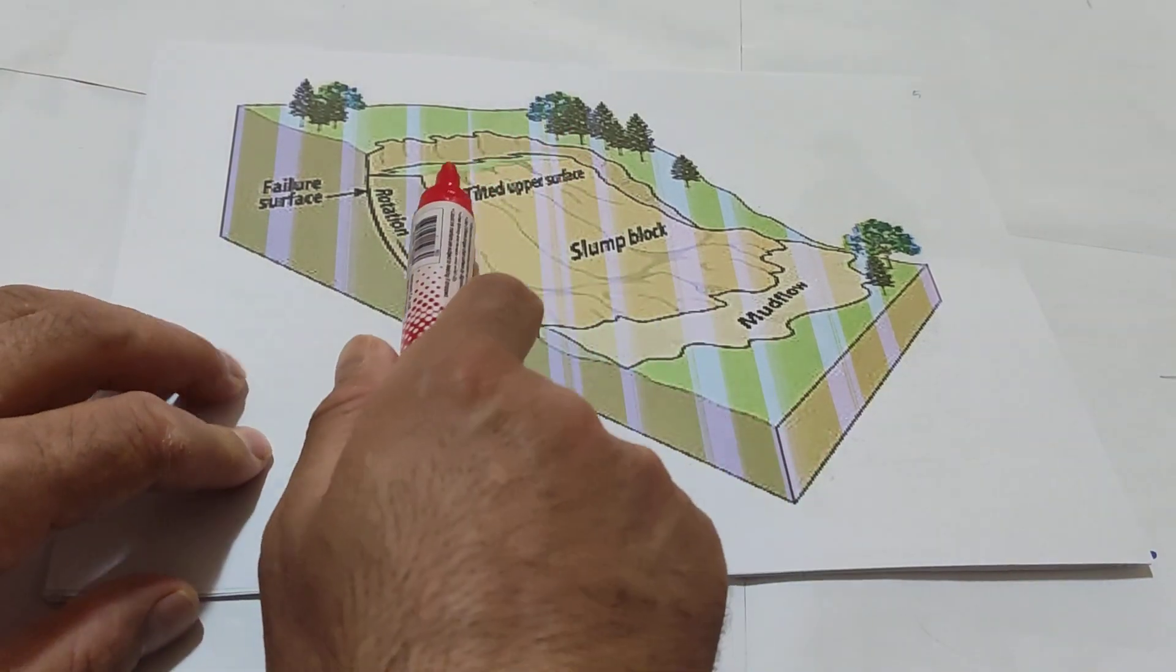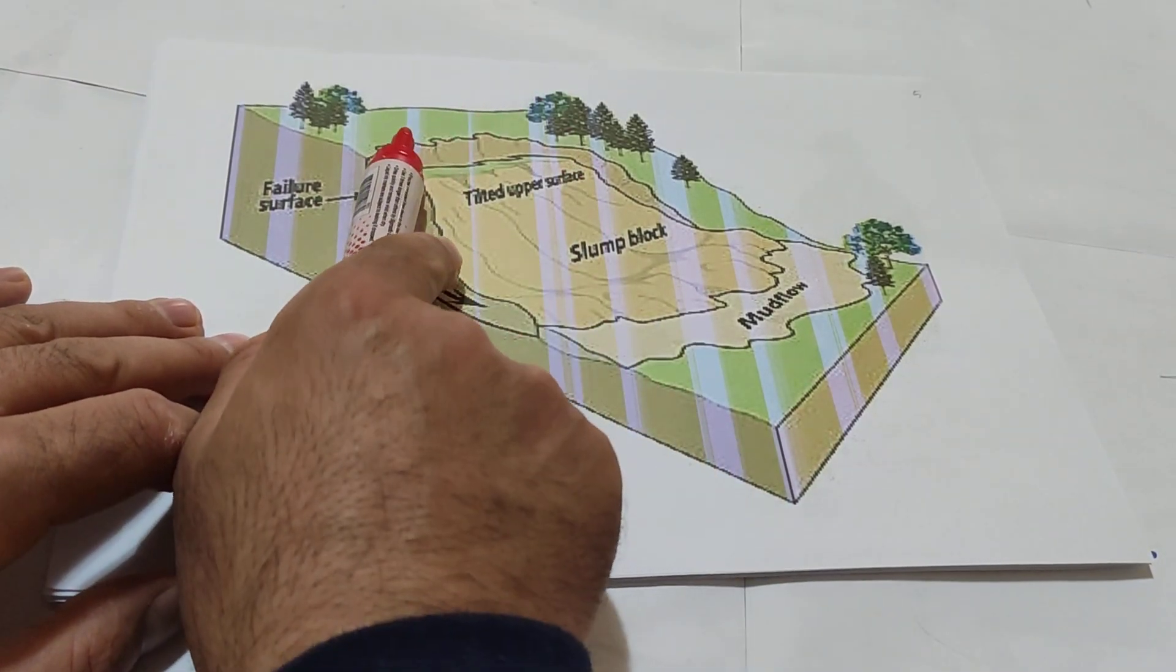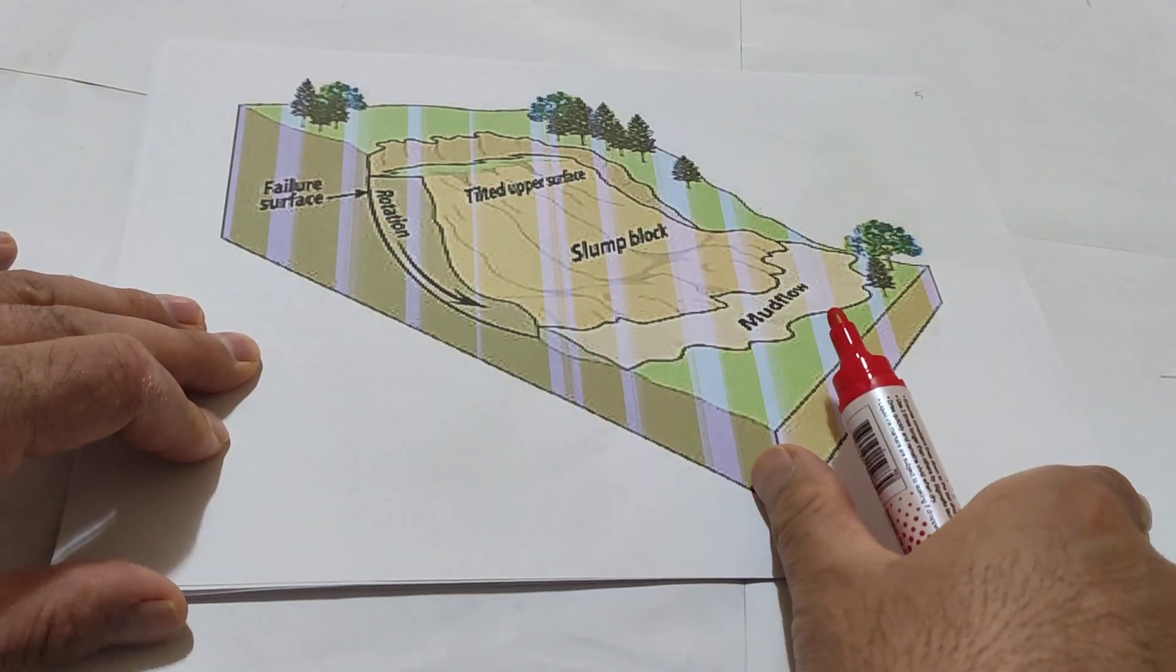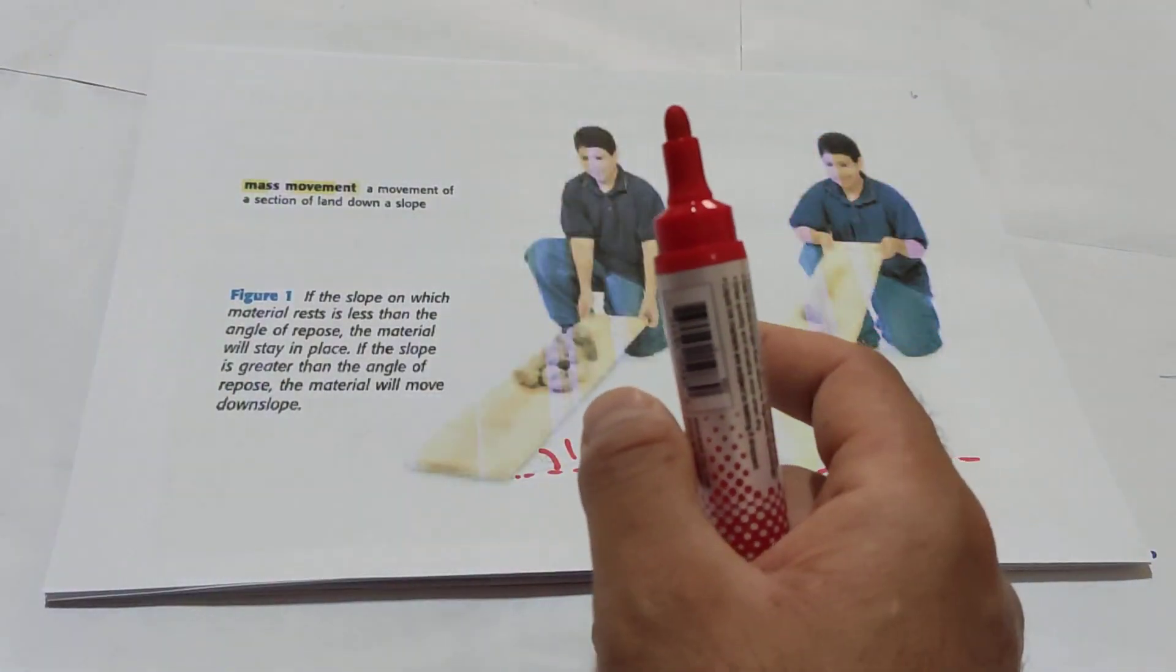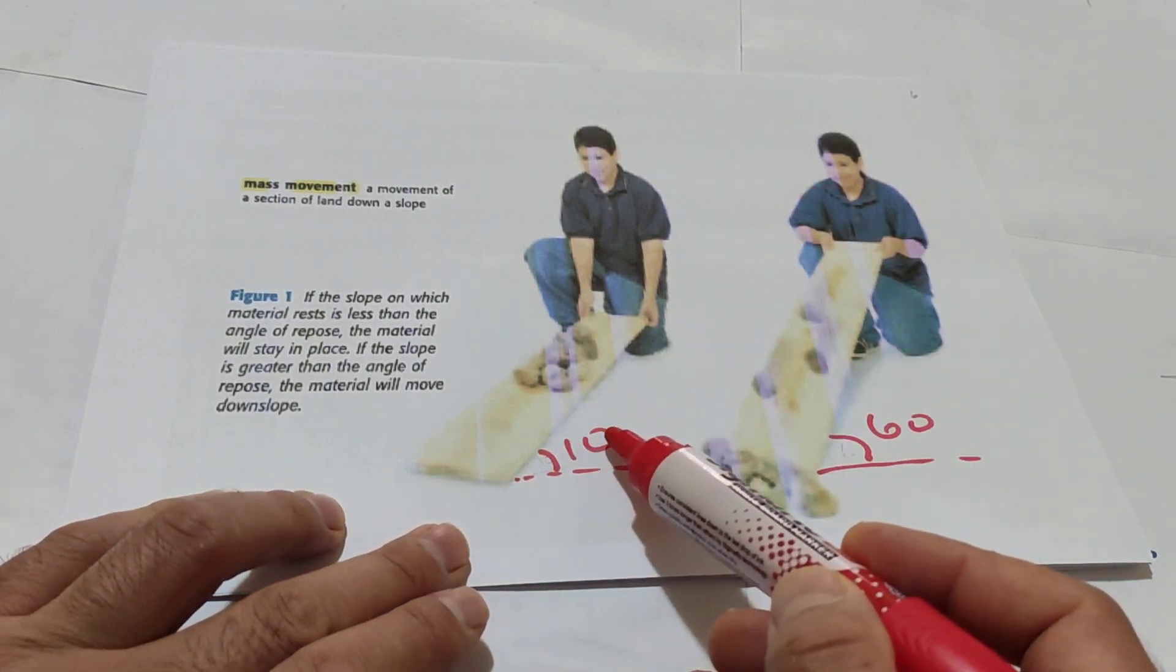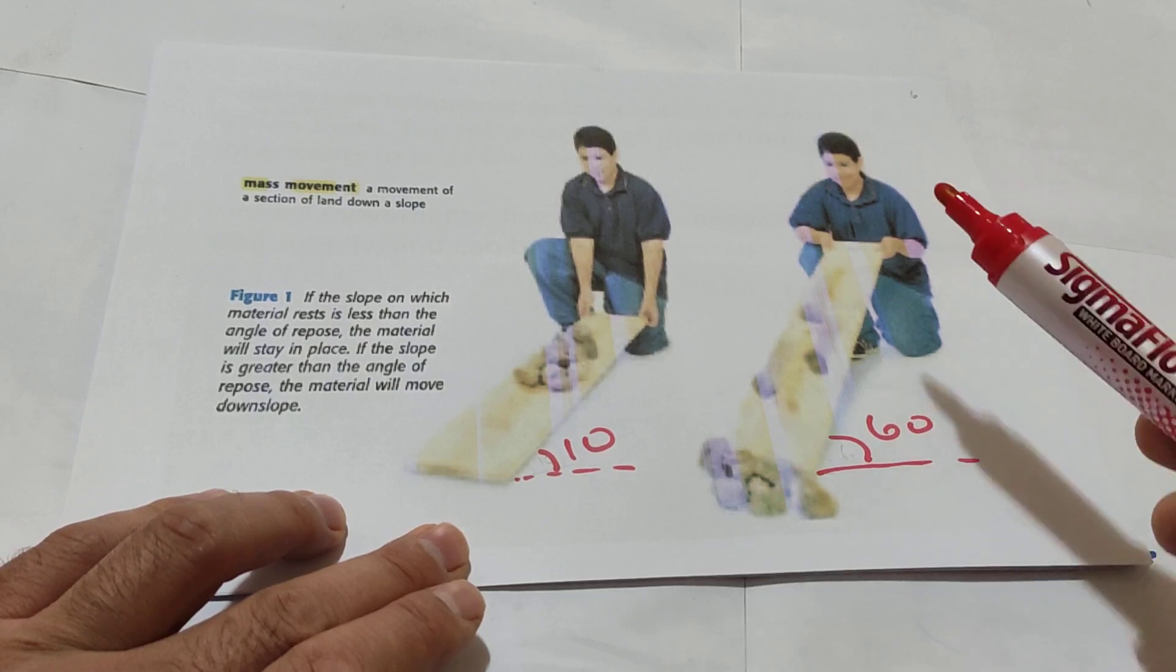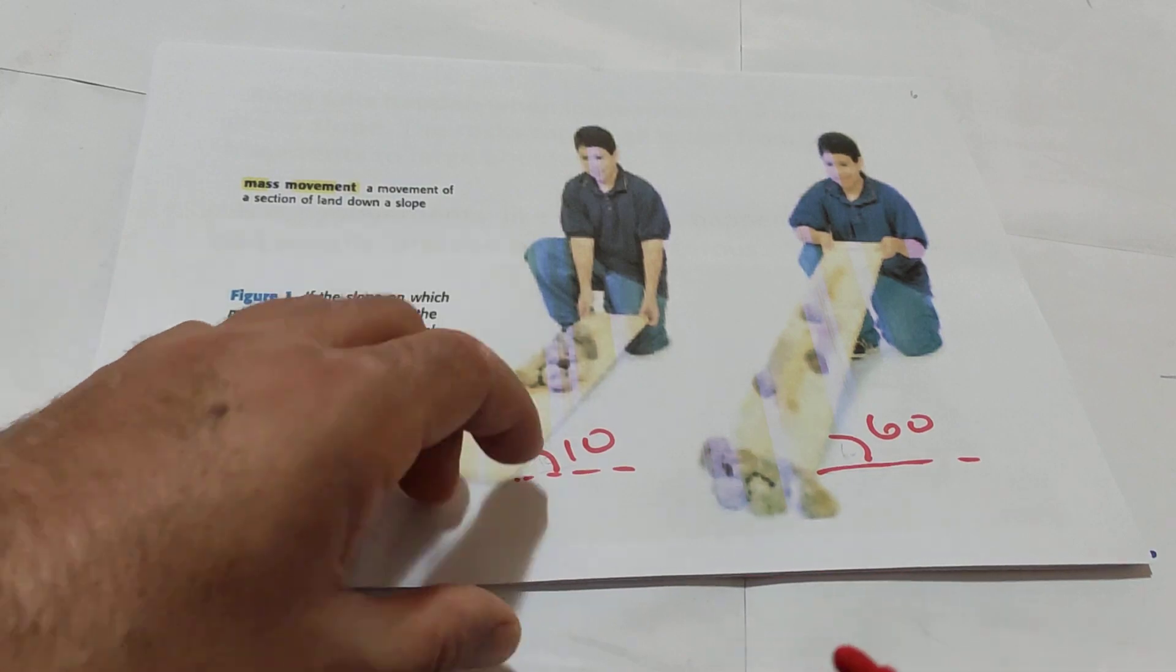Another example here: part of land moves from here to here. So what happened? These are also movement of land or movement of mass. The angle of repose here is 10, and angle of repose 60. So the material moves here faster. Because of why? Angle of repose.